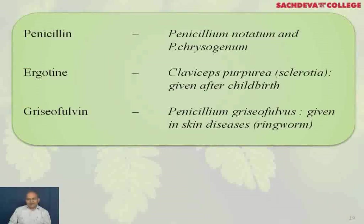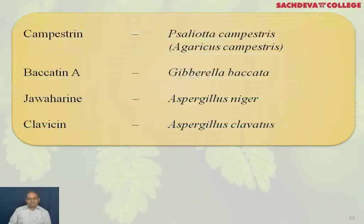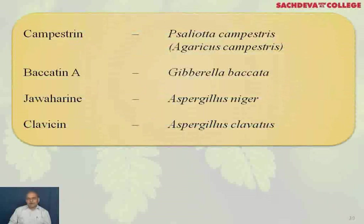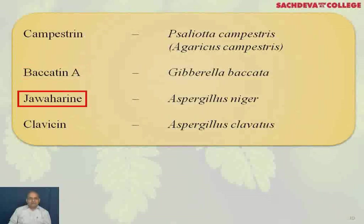Campestrin is obtained from Psalliota campestris or Agaricus campestris. Brefeldin A, Gibberella, Bikaverin, Javanicin from Aspergillus niger, and Clavacin from Aspergillus clavatus are also important fungal products.